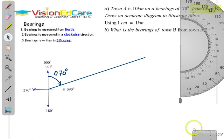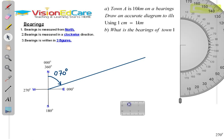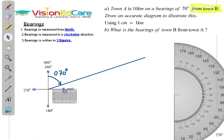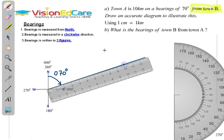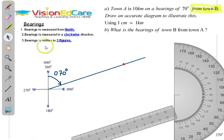Now we need to measure 10 kilometers away. We use our ruler and measure 10 kilometers away. Bear in mind the scale says 1 centimeter represents 1 kilometer, so we just need to measure 10 centimeters to represent that. 10 centimeters is right at this point here — town A is 10 kilometers away, which is right at this point here.